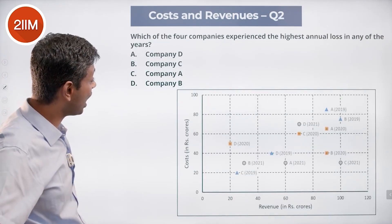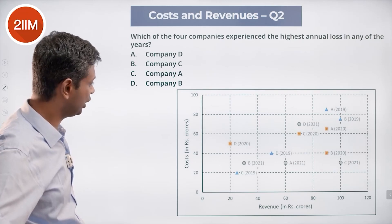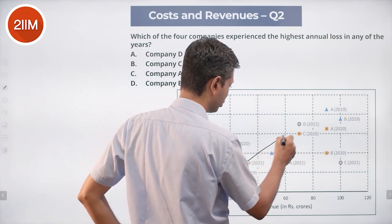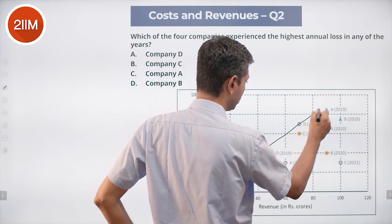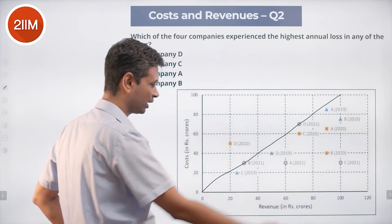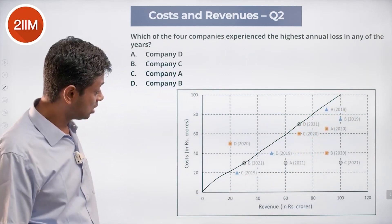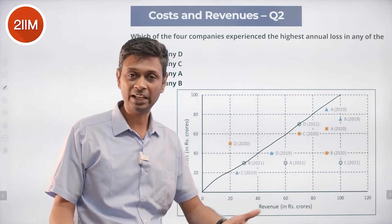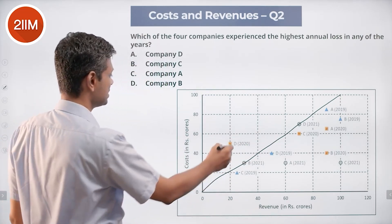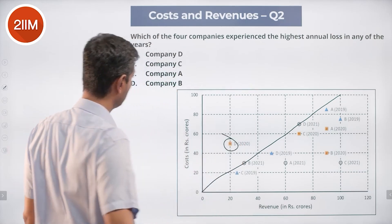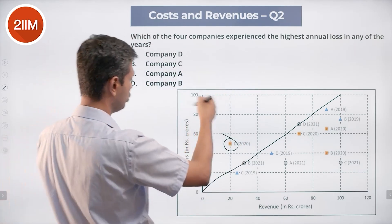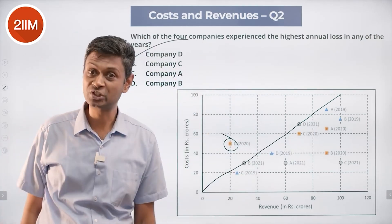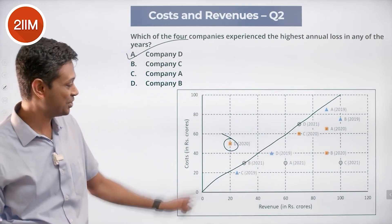Which of the four companies experienced the highest annual loss in any of the years? Anything to the left of the line is loss-making. B and D may have made some small loss. D is here — loss-making: 20 minus 50 = 30 crore loss. Maybe it's a startup which is getting funded heavily. D is the answer for highest annual loss.